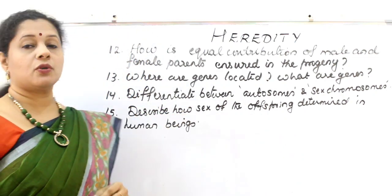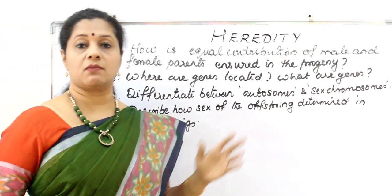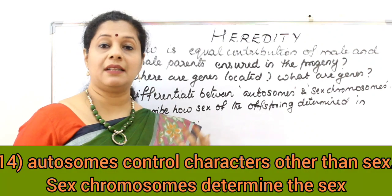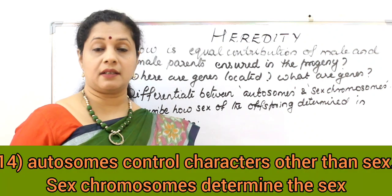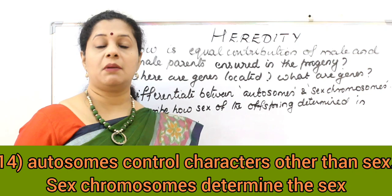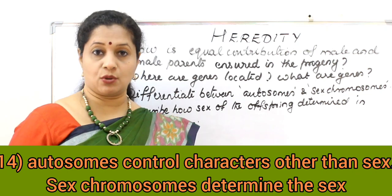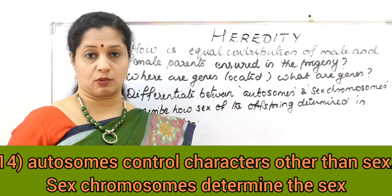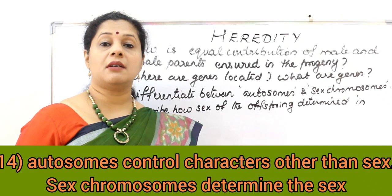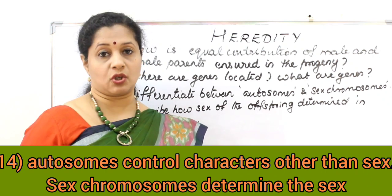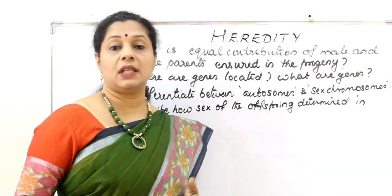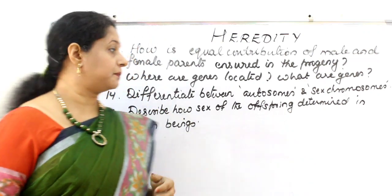Differentiate between autosomes and sex chromosomes. Chromosomes that determine characteristics other than sex are called autosomes. In human beings there are 22 pairs of autosomes. The chromosomes that determine sex are called sex chromosomes — in human beings, the 23rd pair is the sex chromosome.